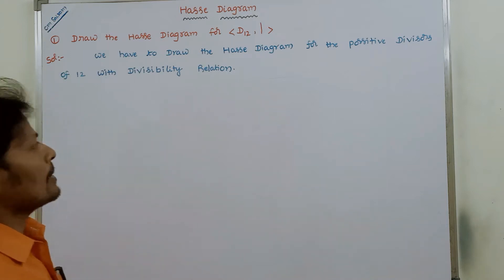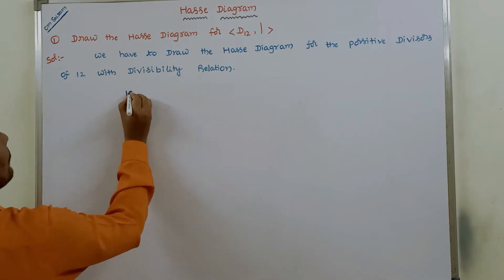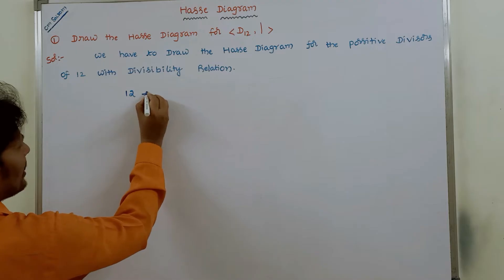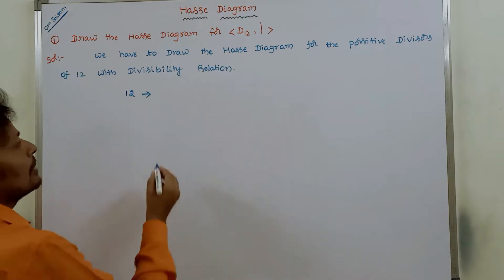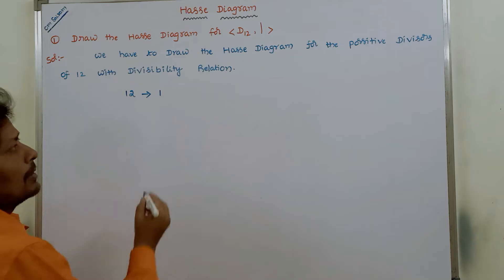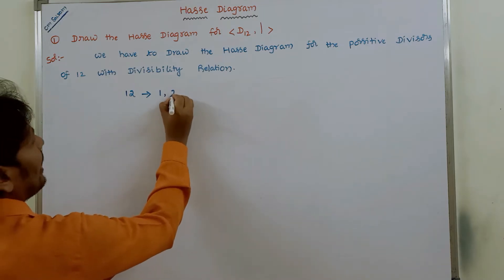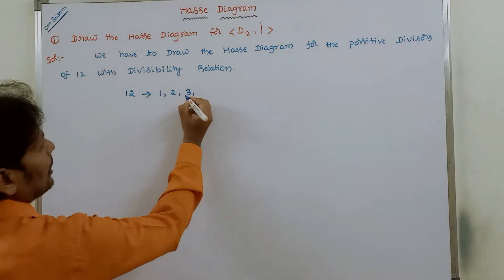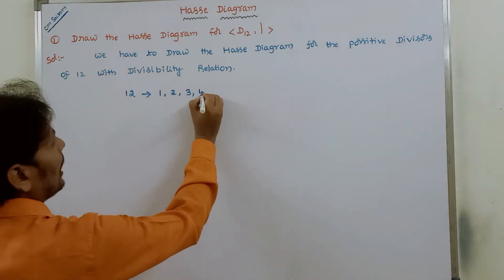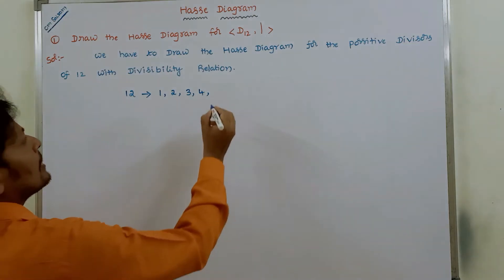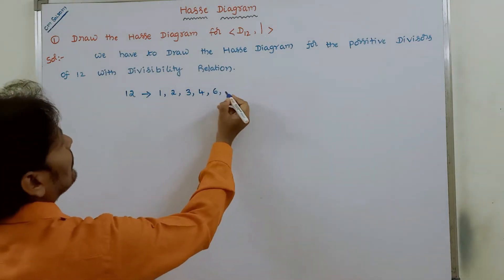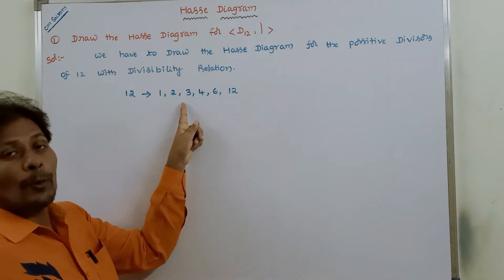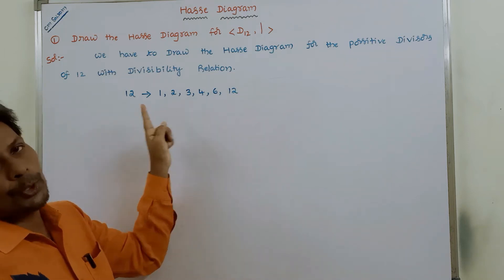First, we have to find out the positive divisors of 12. The positive divisors of 12 are: 1 divides 12, 2 divides 12, 3 divides 12, 4 divides 12, 6 divides 12, and 12 divides 12. So these are the positive divisors of 12.